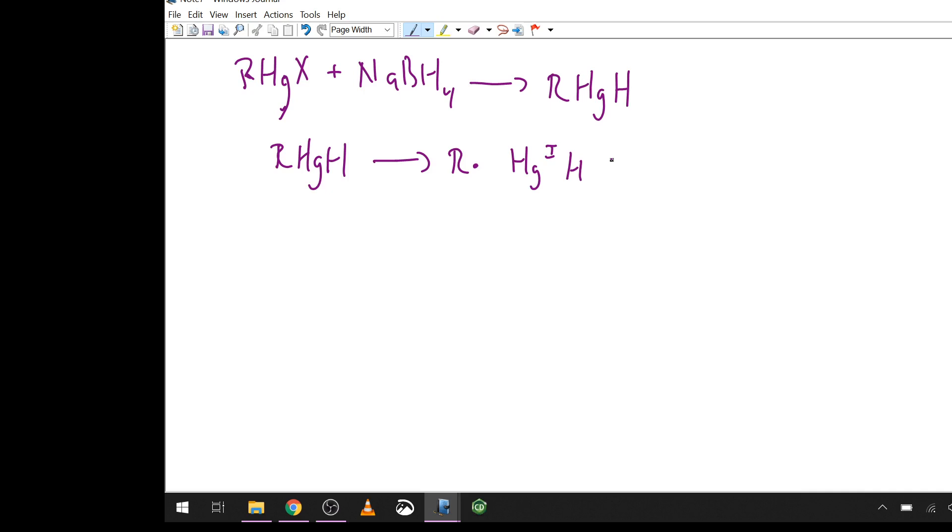That then undergoes a dissociation of the carbon group and a mercury-1 hydride. Now up to this point we've been looking at mercury-2, both of these up here are mercury-2, here and here are both mercury-2. But then we're going to see a radical chain reaction, again things we will talk about more in detail in the near future.